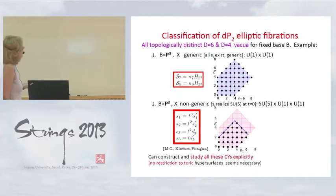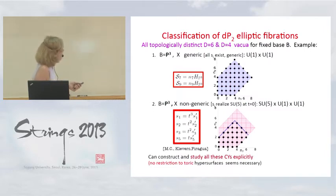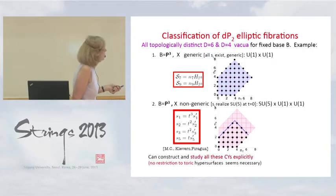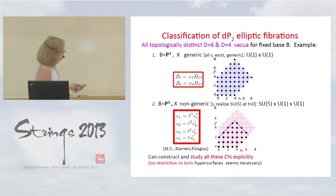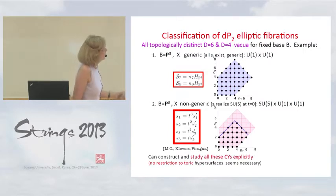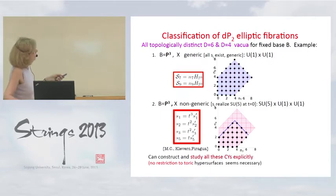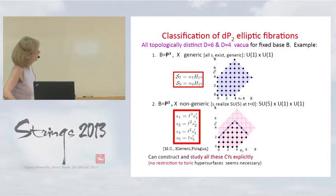For constructing examples with grand unified gauge group, the Calabi-Yau is not generic. In this case, some of the sections are special. In particular, blowing down four particular sections increases the symmetry to SU-5. Again, the classification of all possible fibrations is more constrained, with fewer choices of the corresponding integers.